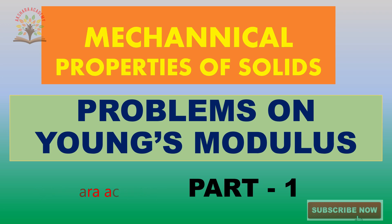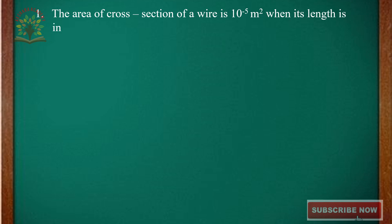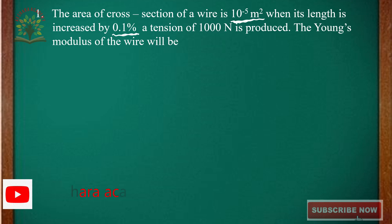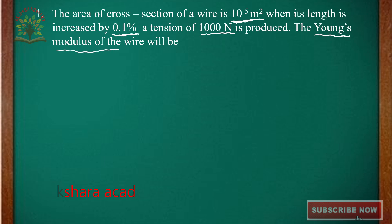Now we will go to the first problem. The area of cross-section of a wire is 10 to the power of minus 5 meter square. When its length is increased by 0.1%, a tension of 1000 Newtons is produced. Find the Young's Modulus of the wire.